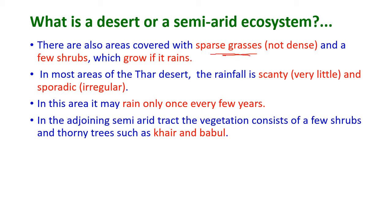There are also areas covered with sparse grasses — not densely distributed — and a few shrubs which grow only when there is rain. In most areas of the Thar Desert, the rainfall is scanty and sporadic, meaning it is very little and irregular. It may rain only once in every few years. In the adjoining semi-arid tracts, the vegetation consists of a few shrubs and thorny trees such as the khair and babul.